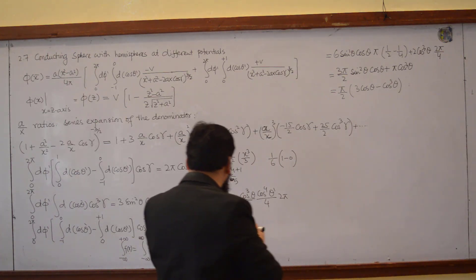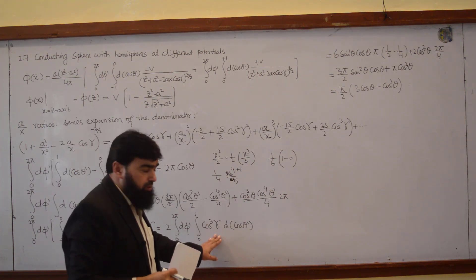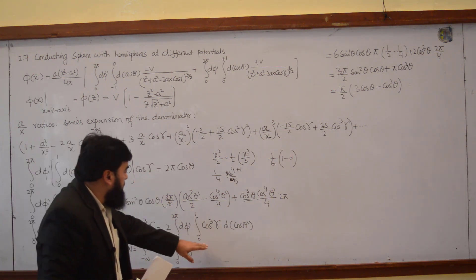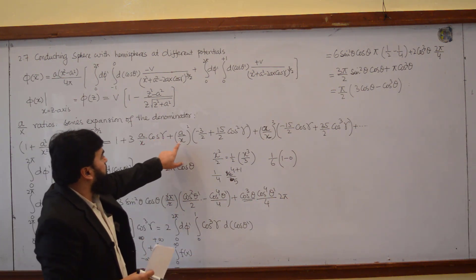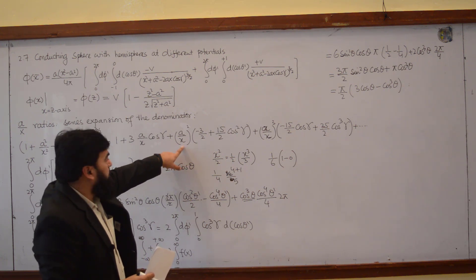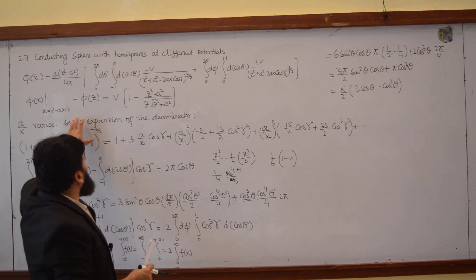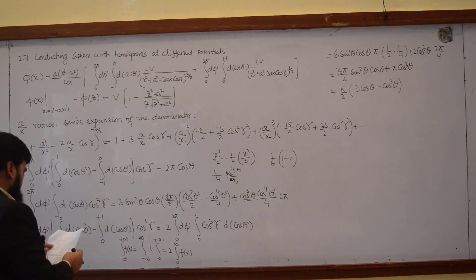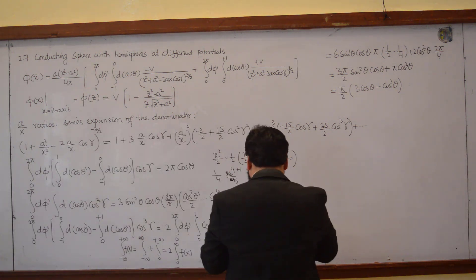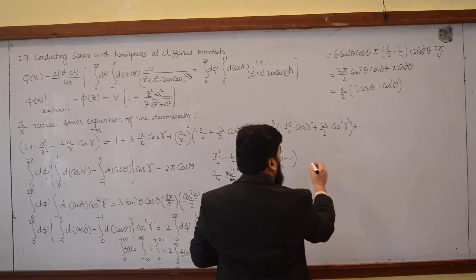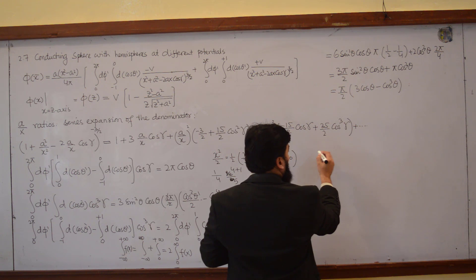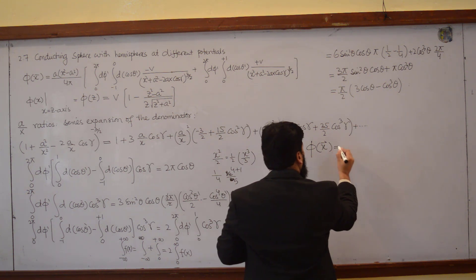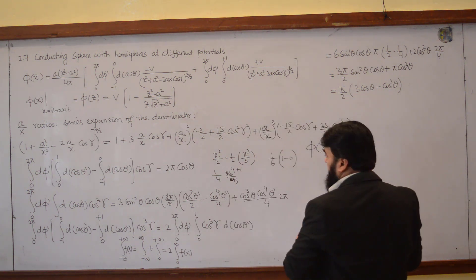We have found cos gamma as well as cos cube gamma. Now we will put these into the equation. So let me write that phi of x is equal to — phi of phi of x is equal to v over 4π.